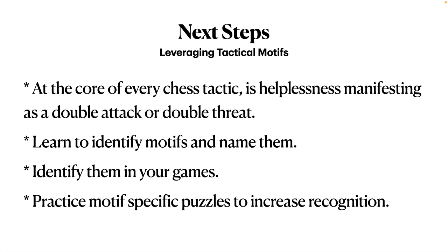Having learned these four tactical motifs — fork, DDAS, pin, and skewer — what are the next steps? The first step is to realize that at the core of every chess tactic is helplessness manifesting as a double attack or double threat. A single attack is easy to escape — a watchful player just moves their piece to safety. But a double attack puts you under a constraint: you cannot save both pieces at the same time. That's why tactical motifs are such a powerful weapon for chess players to win games.